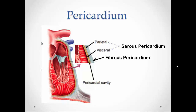The layers of the heart begin with the pericardium — the serous membranes that cover the heart. There are two layers: the fibrous pericardium, a thick outer layer of dense connective tissue that protects and anchors the heart to the diaphragm and prevents overfilling; and the serous pericardium, which has a parietal layer on the inside of the fibrous pericardium and a visceral layer covering the heart itself. Between them is the pericardial cavity, filled with serous fluid to reduce friction during heart contraction.